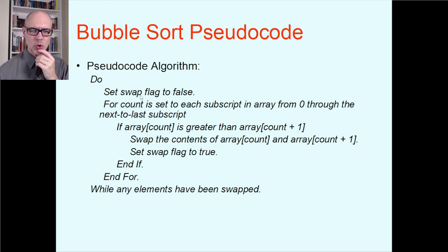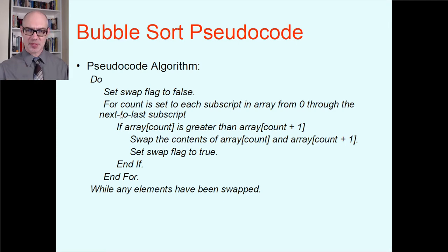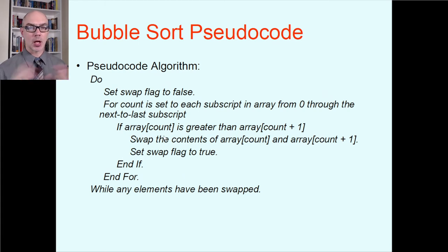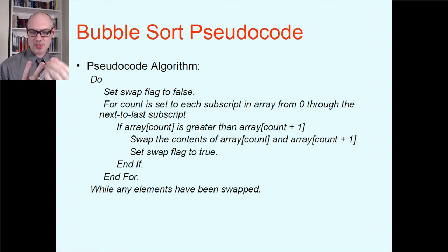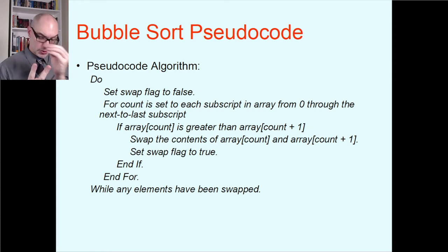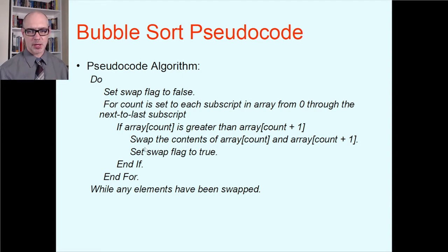Notice that bubble sort has two nested loops — an outer do-while loop and an inner for loop — and in our review we said nested loops would be important. Also, pseudocode is used to highlight important things and gloss over details. When the pseudocode says 'swap the contents of these two elements,' you probably know that itself is going to be three lines of C++. You actually need another variable: copy the first into the temp, copy the second into the first, then copy the temp into the second. That's how you actually get a swap done, because you have to copy values without losing either one.